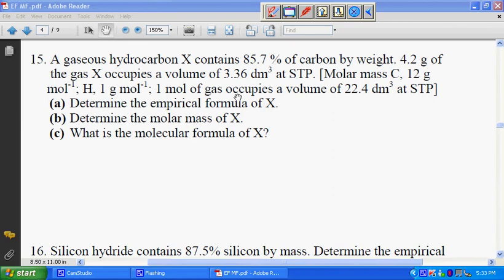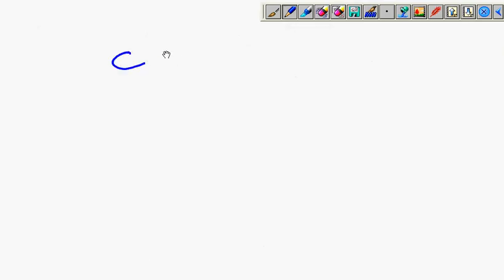First, if we want to solve A, determine the empirical formula of X, we need to figure out certain things. Hydrocarbon is actually a compound CxHy, only carbon and only hydrogen. Even though in language they started off by saying hydrocarbon, we need to bear in mind that when we write formulas for compounds, we write C first before H.